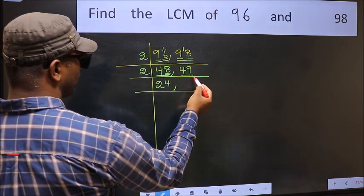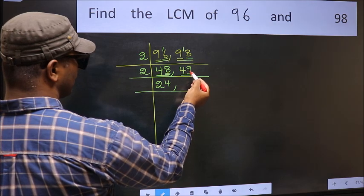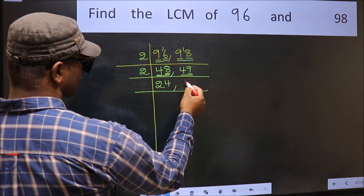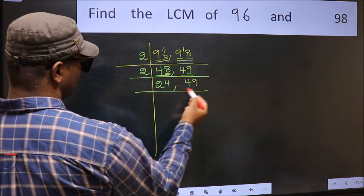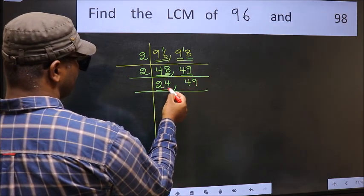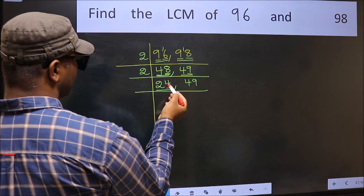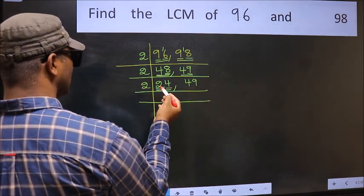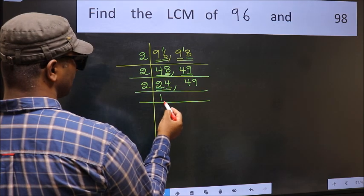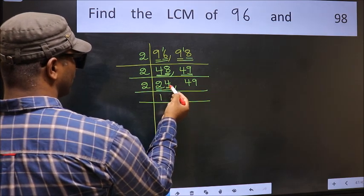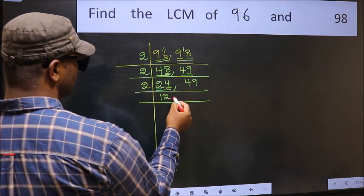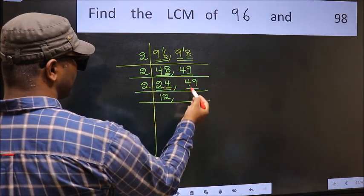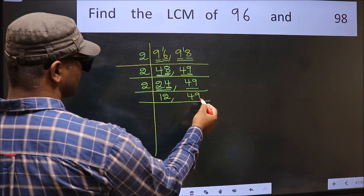Now the other number 49. Last digit 9 — not even, so this is not divisible by 2. So you write it down as it is. Now here we have 24. Last digit 4 — even, so take 2. First number 2: when do we get 2 in the 2 table? 2 ones are 2. The other number 4: when do we get 4 in the 2 table? 2 twos are 4. The other number 49 is not divisible by 2, so you write it down as it is.